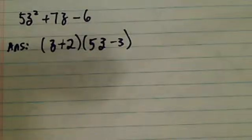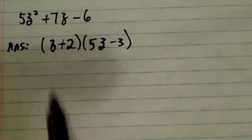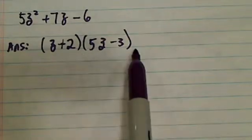How to factor 5z squared plus 7z minus 6. Here's the answer: z plus 2, 5z minus 3.